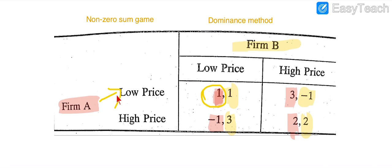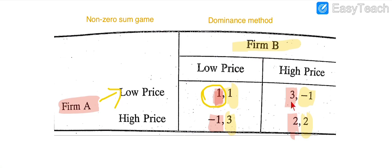But if Firm A is adopting a low price strategy and Firm B is adopting a high price strategy, then Firm A will earn 3 million dollars. So when Firm A plays the low price strategy there are two cases: one million dollars if Firm B also plays low price, and three million dollars if Firm B plays high price.